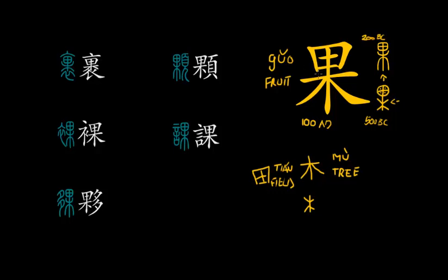I had an idea to also analyze the character phonetically, since there are phono-semantic compound characters where half is responsible for the sound and half for the meaning. I assumed the bottom part 木 (mù) is the semantic element pointing to the meaning fruit, and the top part 田 (tián) is the phonetic element pointing to the pronunciation guǒ. However, I did the analysis and there is no resemblance between the pronunciation of tián and guǒ, even tracing back centuries.